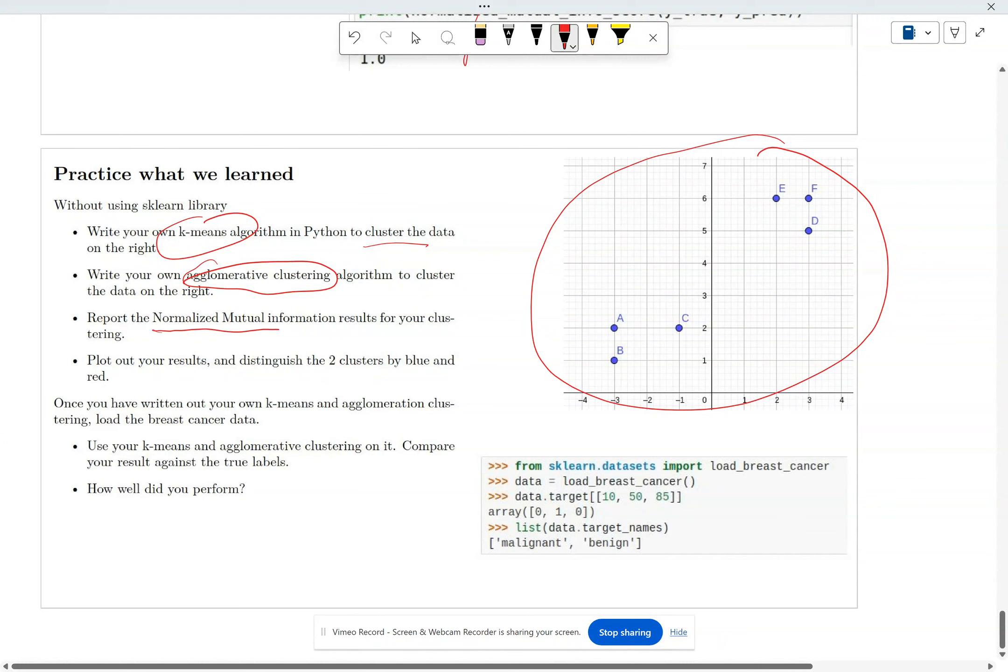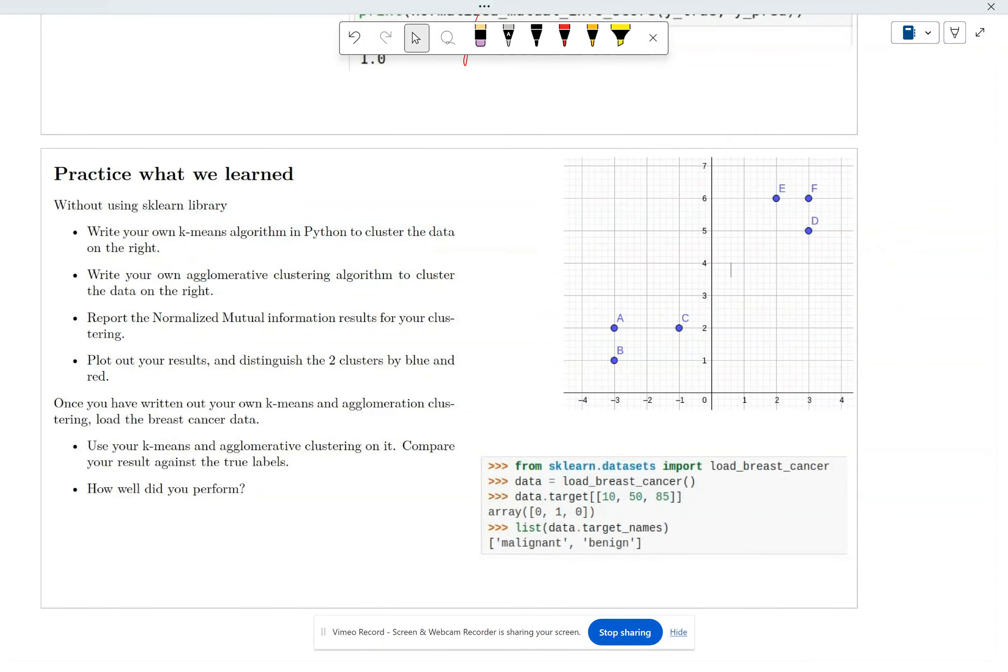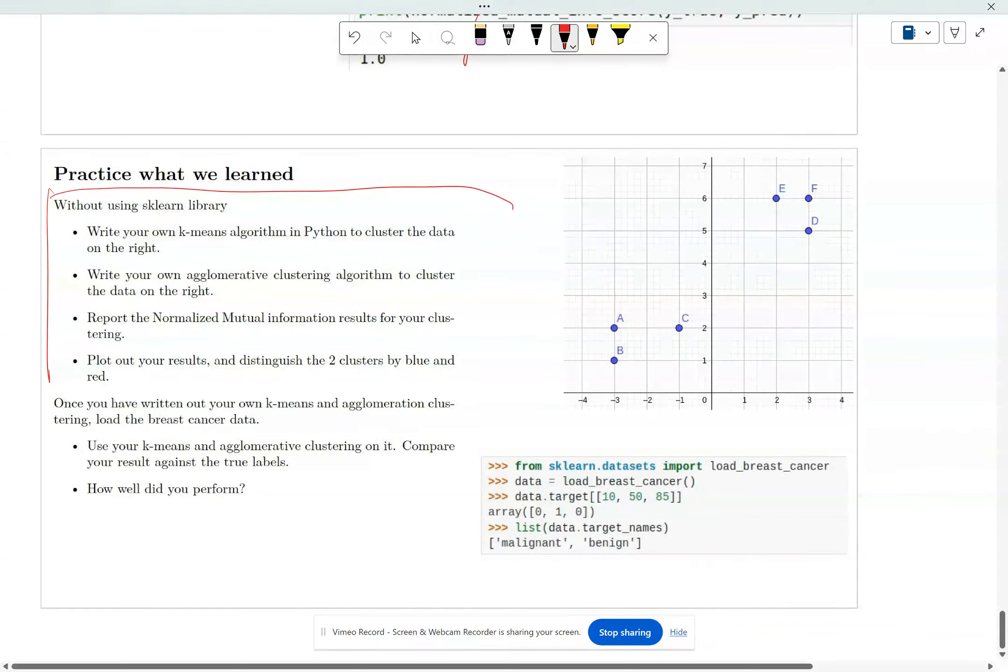After that, you want to report the normalized mutual information result, and then you want to plot your result out. You want to plot them out and make sure your clustering makes sense.